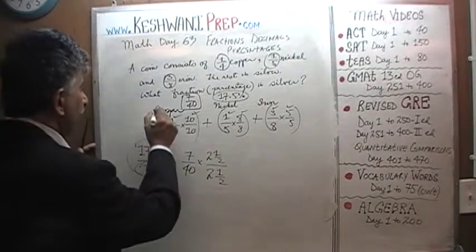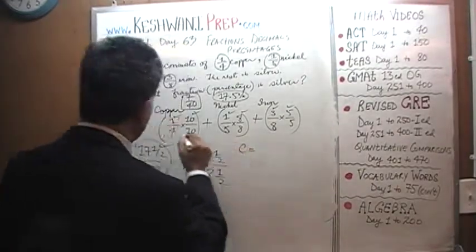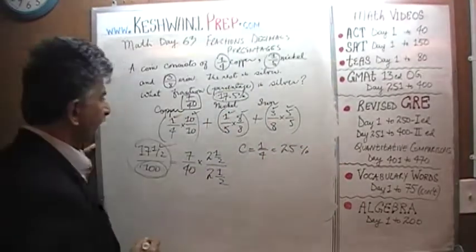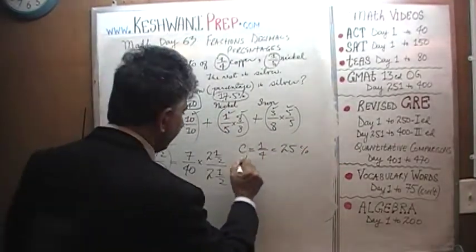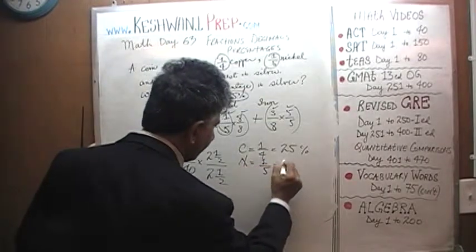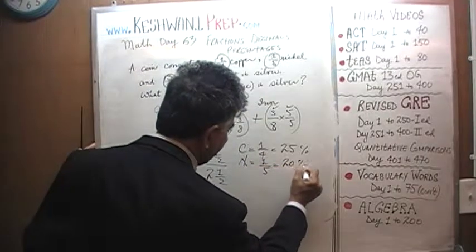Let's start with copper. Copper is one quarter, which is 25%, very simple, very straightforward. Nickel is also very easy. Nickel is one fifth, which is 20%. That's also very simple.